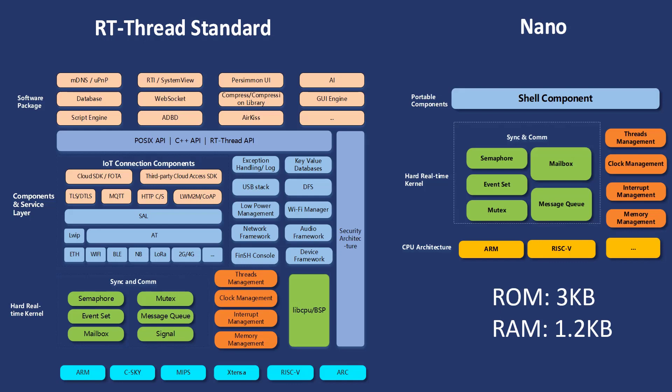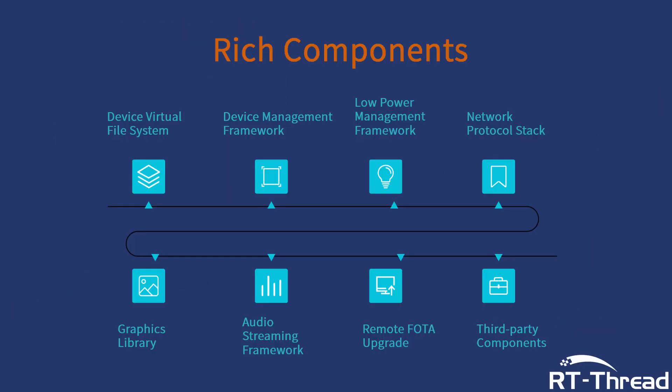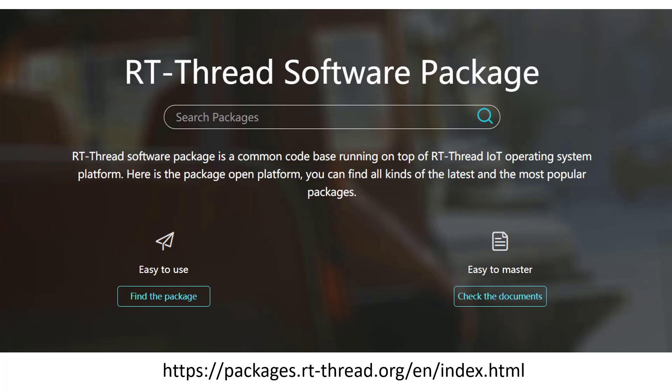RTThread has a standard version and a nano version. The standard version consists of a kernel layer, components, service layer, and IoT framework layer. The nano version has a very small size — it requires only 3KB of flash and 1.2KB of memory — making it very suited for extreme resource-constrained embedded systems. RTThread has complete middleware components covering almost all the underlying components needed for the IoT industry, including file system, low-power management, network protocol, GUI, audio framework, AT component, and more. RTThread also carries more than 300 software packages, most contributed by the community.